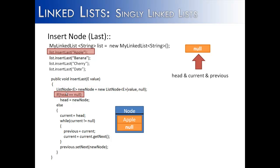What we do next is check if head is null — and yes, head is null. So we say the head is now equal to the new node we just created. If there isn't anything in the list, we create a new node, it becomes the head, and we don't have to do anything more because if there's only one node, it's the last node in the list.